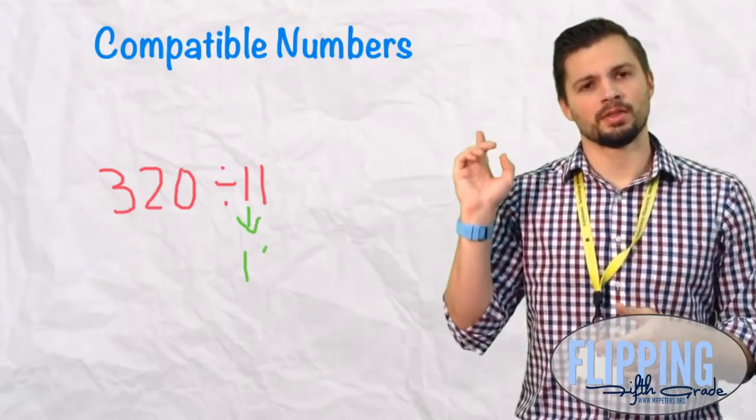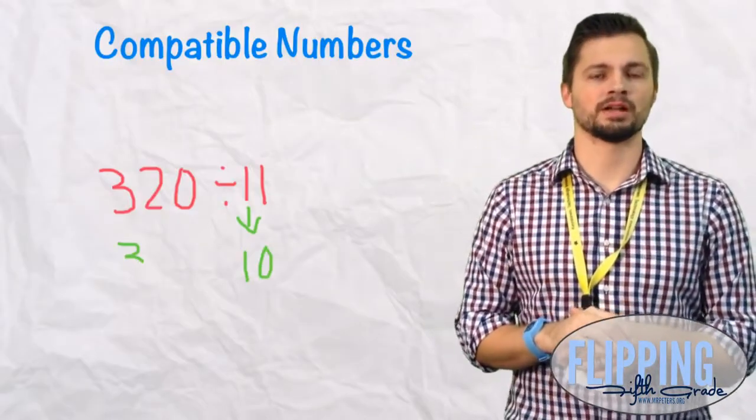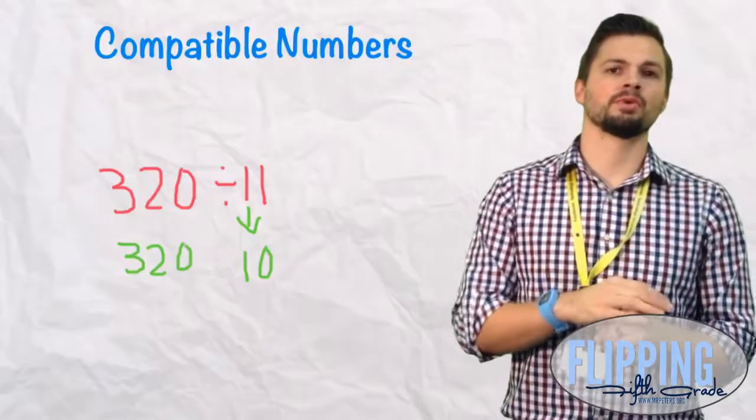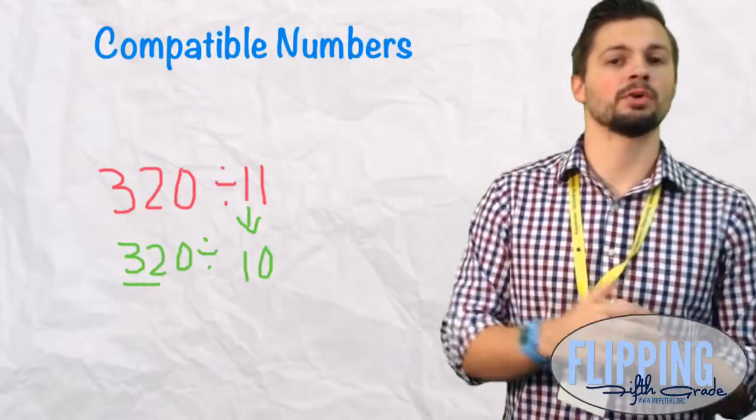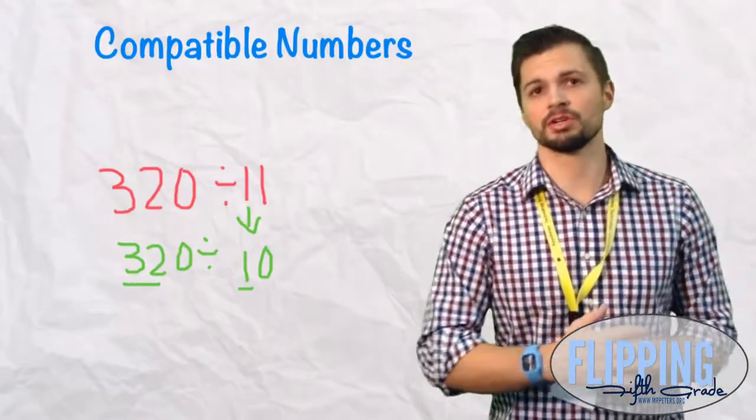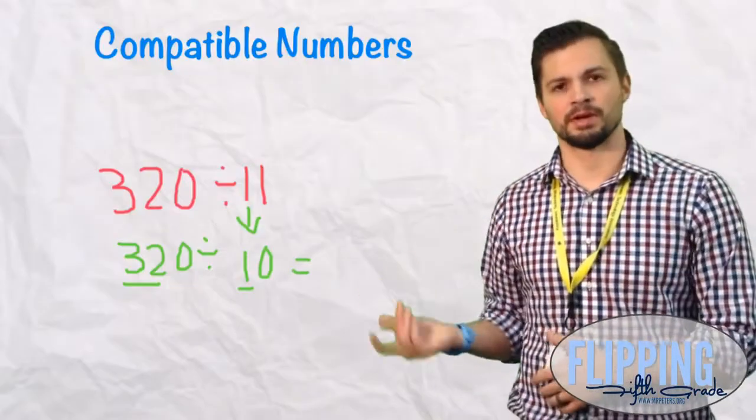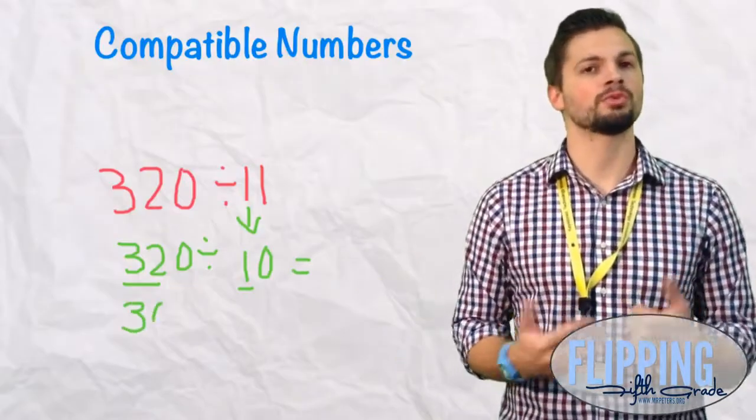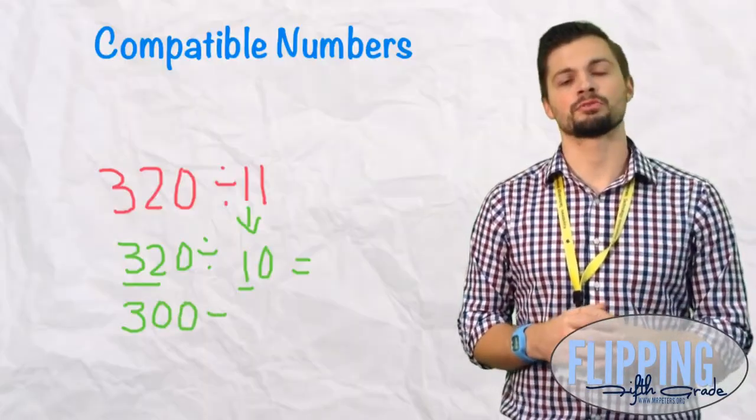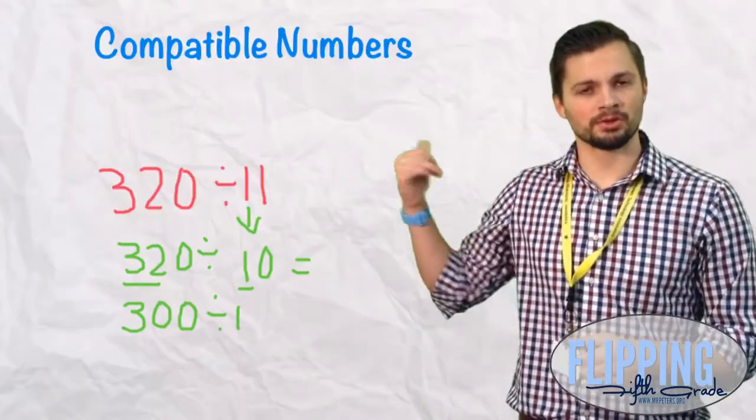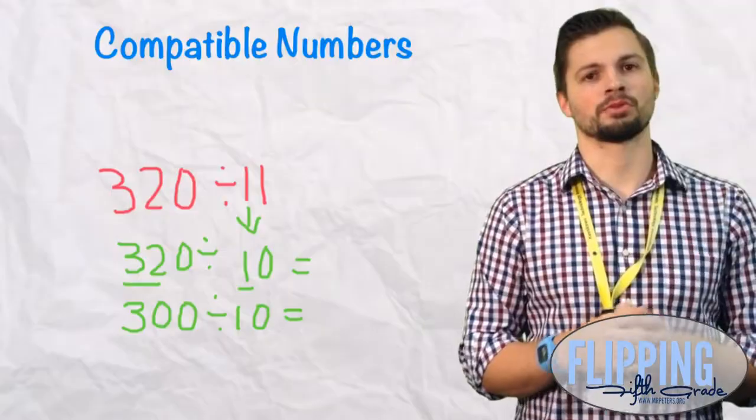And then we underline the 32 there, the non-zero. What's the number that 10 would go into? The answer is 30. So we can't do 30 divided by 10, because we're not rounding 320 to 30. We're rounding 320 down to 300. So then we underline our non-zero digits, 3 and 1.